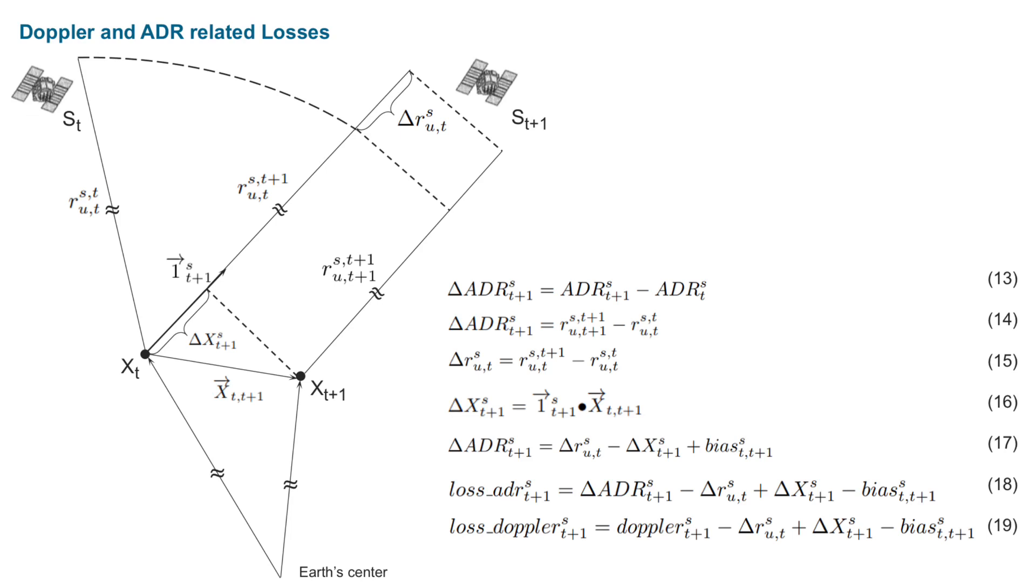We can also find that there are some geometry constraints between the two time epochs. If we are familiar with double difference algorithms, it is easy to understand. In equation 17, we introduce a variable to model the bias between epochs. So we can define ADR loss in equation 18. And we can also define Doppler loss as shown in equation 19.